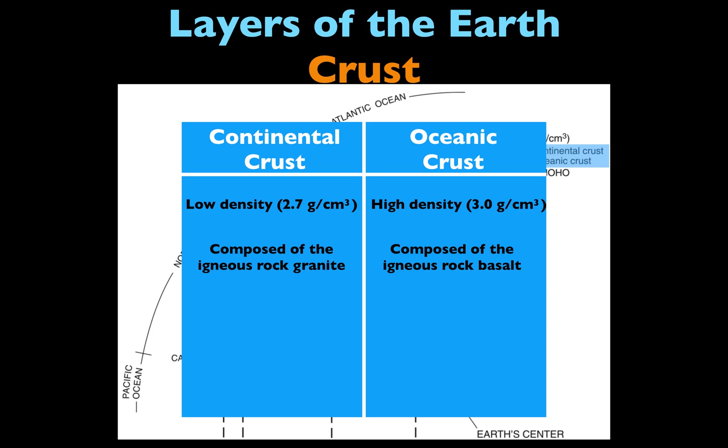Igneous rock granite is considered to be a felsic igneous rock, and felsic rocks have a lower density. Basalt is a mafic igneous rock, and those igneous rocks have a higher density.